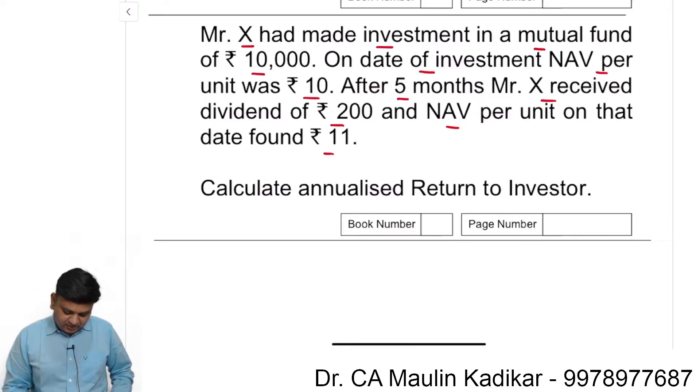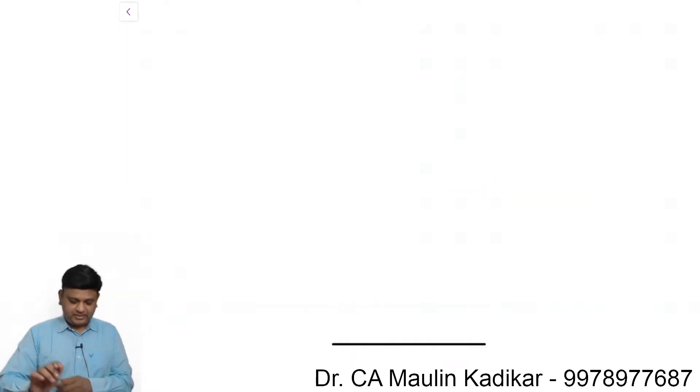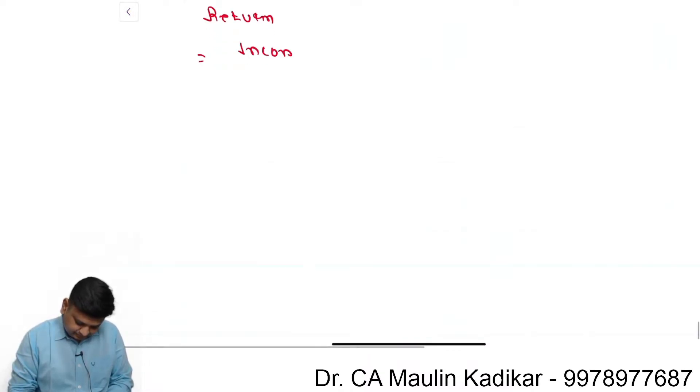Question asks to calculate annualized return to investor. Try to calculate the answer on your own and put your answer in the chat box. Write an answer: return is income upon investment into 12 divided by N into 100.